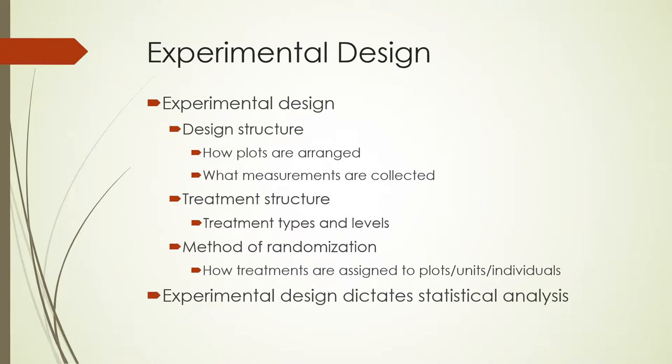Milliken and Johnson, in their 1984 book 'Analysis of Messy Data,' described three different parts to experimental design: design structure, treatment structure, and method of randomization. Design structure refers to how the plots are arranged, what kinds of measurements are taken, and so on.